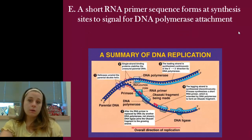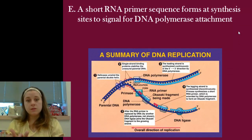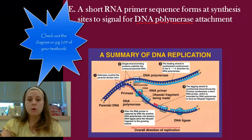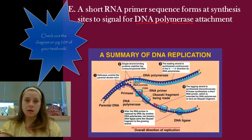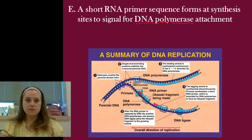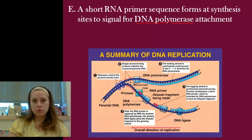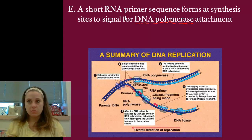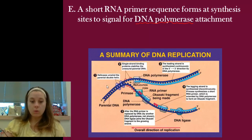A short RNA primer sequence is going to form at the sites to signal for DNA polymerase to attach. DNA polymerase is the important enzyme — it's the one that attaches the correct nucleotides to the actual strand. The primer sequence kind of sets the stage and gets everything ready for DNA polymerase to come in, as part of this entire series of enzymes working together as a massive enzyme complex to ensure everything gets put together the right way.